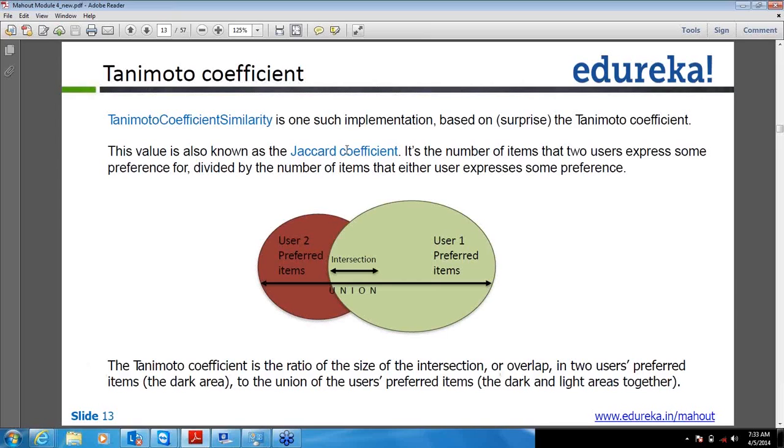So how it is calculated: take the intersection part - means the preferences which are matching for both the users - divided by total preferred items by both the users individually, and then the number is called as a Tanimoto coefficient.